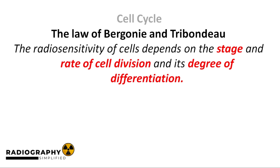Now we round this segment off with a really important law that sums up everything we've been talking about. It's called the Law of Bergonié and Tribondeau. It states that the radiosensitivity of cells depends on the stage and rate of cell division and its degree of differentiation. We can infer three things from this law. First, cells are more radiosensitive when they are actively participating in mitosis compared to when they are in a resting state. Secondly, cells that divide rapidly are more radiosensitive than cells that do not divide at all. This is why nerve cells in an adult are extremely radio-resistant, because they do not really divide. On the other hand, cells of the testes are radiosensitive because they divide a lot. Thirdly, undifferentiated cells are more radiosensitive than differentiated cells.